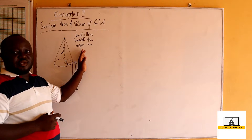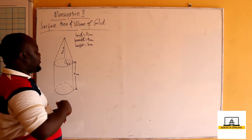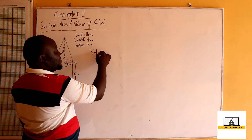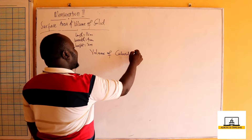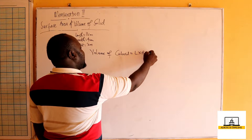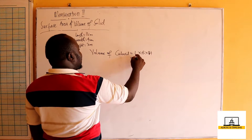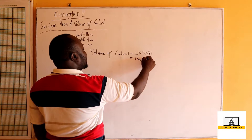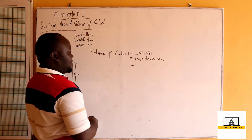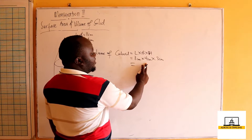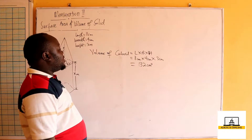We can find the volume of the cuboid. The volume of a cuboid is l times b times h. So the volume of the cuboid equals 11 centimeters times 4 centimeters times 3 centimeters, giving us 11 times 4 times 3, which equals 132 cubic centimeters.